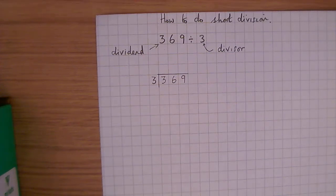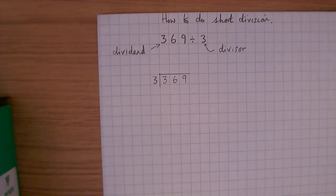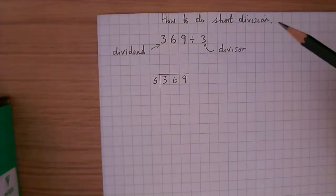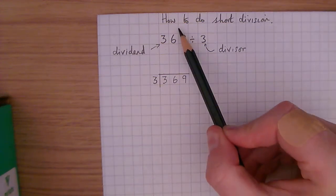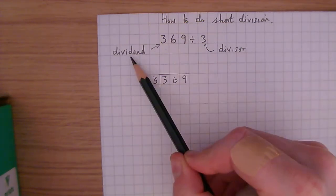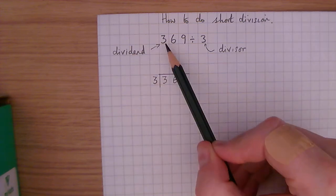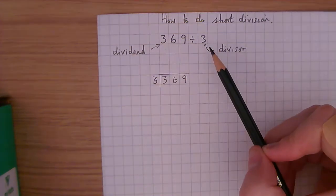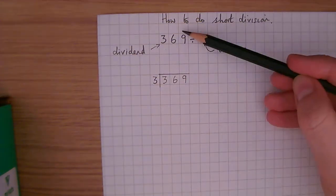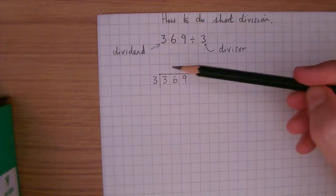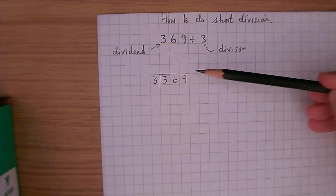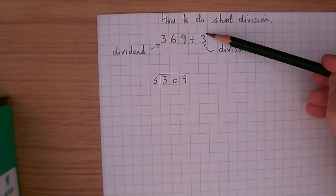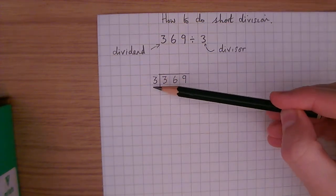How to do short division. 369 divided by 3. The number that we are dividing is called the dividend, that's 369, and the number we're dividing by is called the divisor. When we've got a large number like this, we're going to use what we call the bus stop method, or the bus shelter.